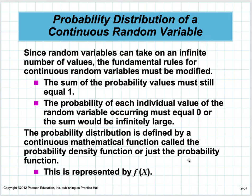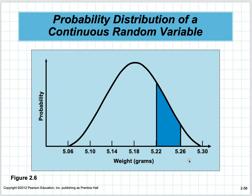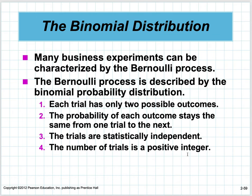This is the end of part one. For continuous random variables containing an infinite number of values, we look at a range — the probability of any specific value is zero. Instead, we find the probability of a value being between two bounds, or greater than or less than a value. For example, what's the probability that seemingly identical ball bearings weigh between 5.22 and 5.26 grams? Next we'll cover the binomial distribution and normal distribution in part two. Thank you for your attention and we'll talk again soon.